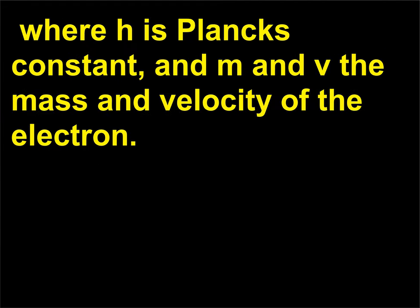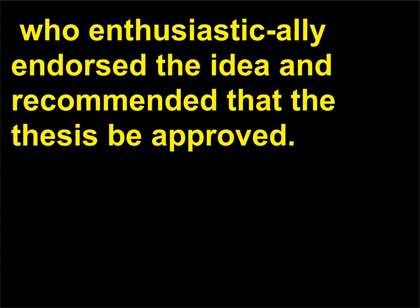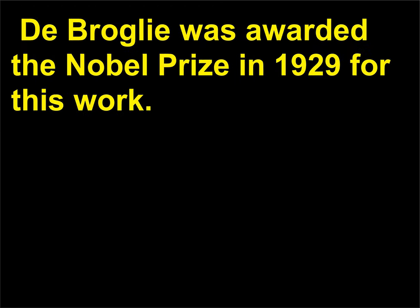Where h is Planck's constant, and m and v are the mass and velocity of the electron. The thesis was forwarded to Einstein, who enthusiastically endorsed the idea and recommended that the thesis be approved. De Broglie was awarded the Nobel Prize in 1929 for this work.